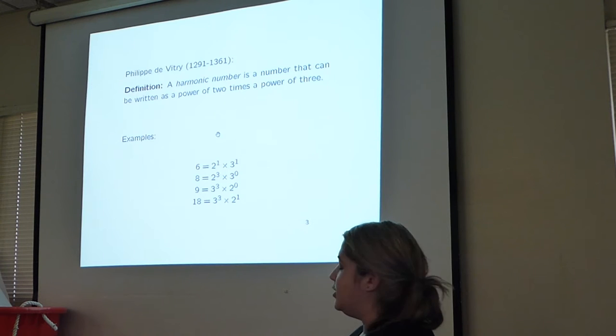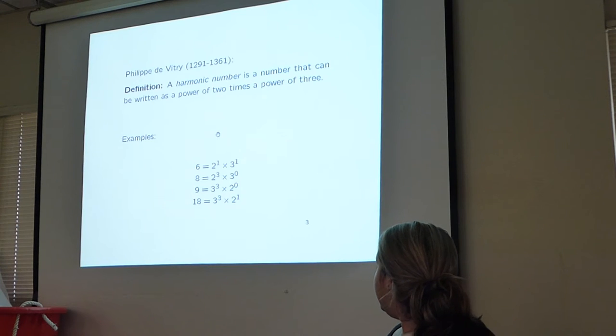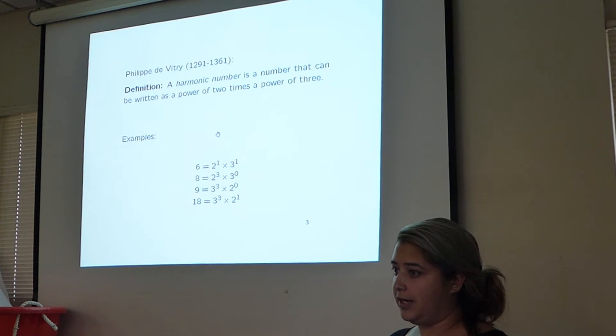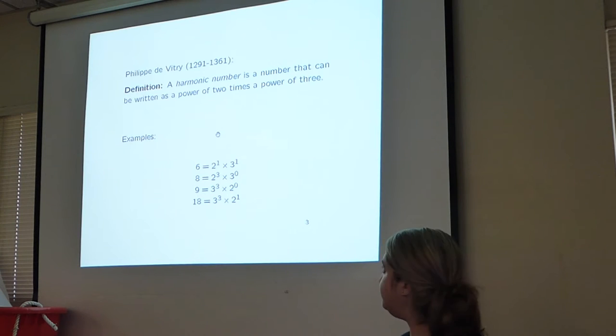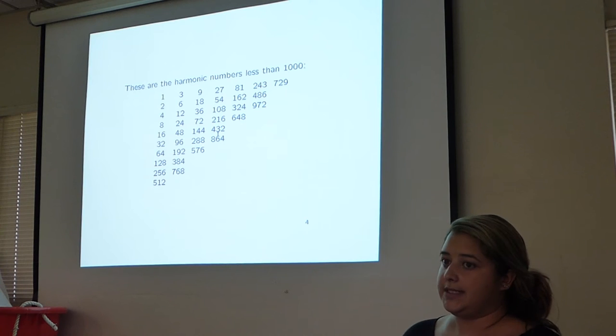Our research started with a lecture we viewed by Dr. Hendrik Lenstra, and he talked about harmonic numbers. The definition of a harmonic number came from Felipe de Bintri, and he defined it as a number that can be written as a power of 2 times a power of 3. Here are a few examples: 6, 8, 9, and 18 are all harmonic numbers, because they can be written as a power of 2 times a power of 3.